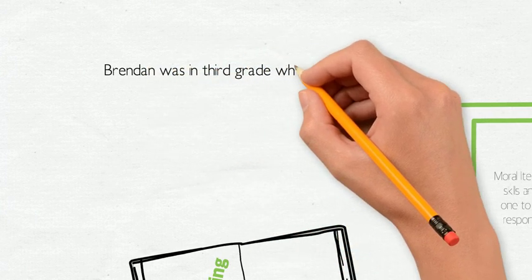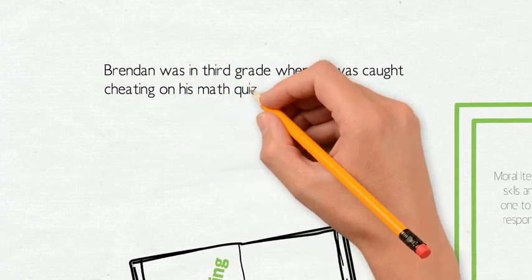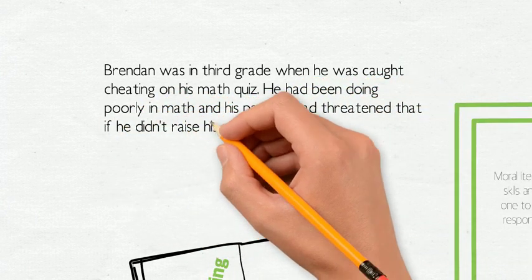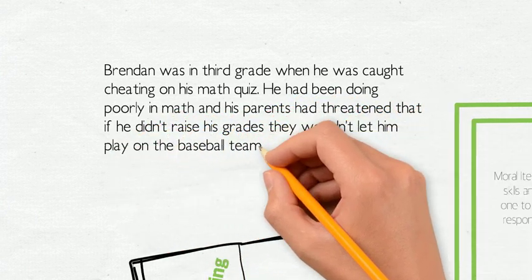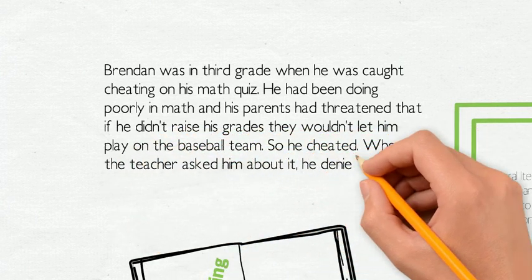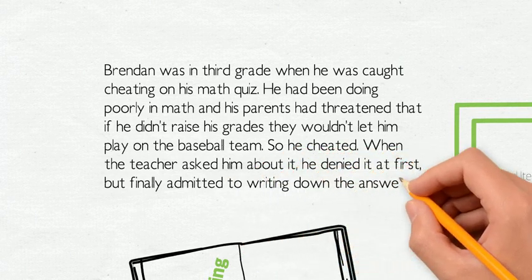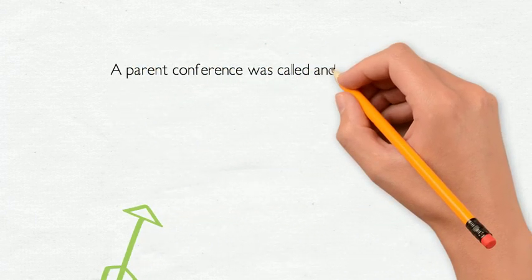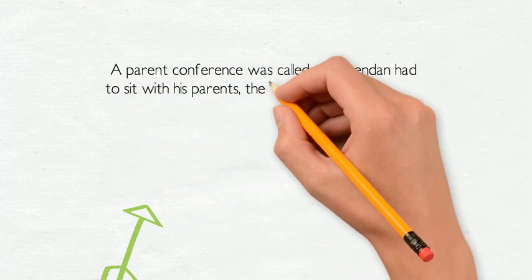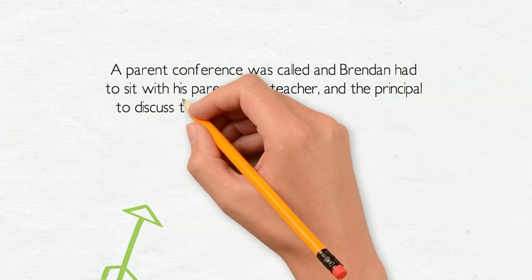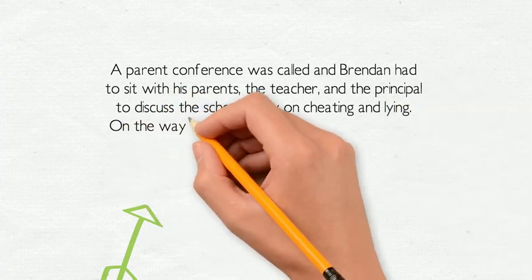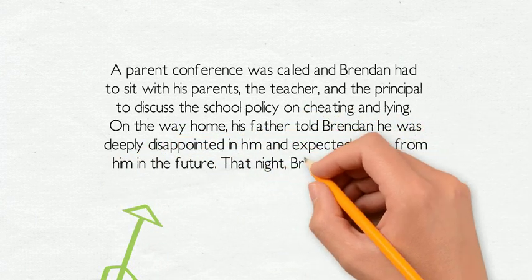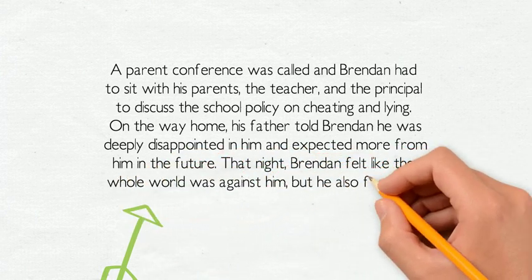Brendan was in third grade when he was caught cheating on his math quiz. He had been doing poorly in math, and his parents threatened that if he didn't raise his grades, they would not let him play on the baseball team. So he cheated. When the teacher asked him about it, he denied it at first, but finally admitted to writing down the answers ahead of time. A parent conference was called and Brendan had to sit with his parents, the teacher, and the principal to discuss the school policy on cheating and lying. On the way home, his father told Brendan he was deeply disappointed in him and expected more from him in the future. That night, Brendan felt like the whole world was against him, but he also felt guilty for letting his parents down.